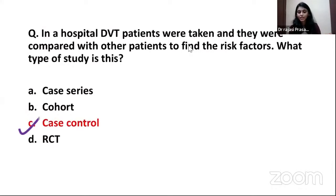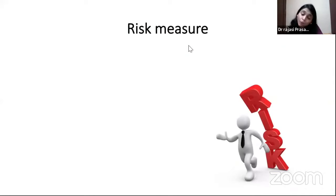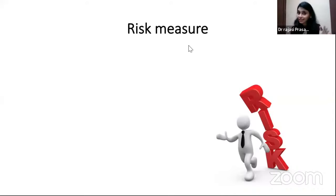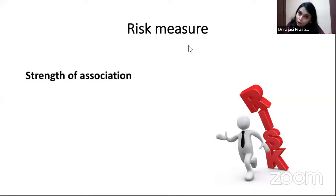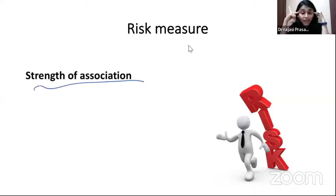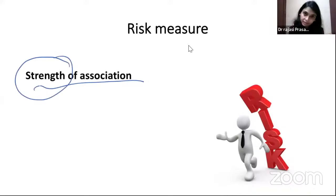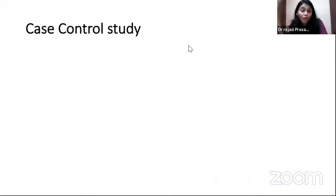Now let's see how to calculate the risk measure. The risk measure is also known as strength of association — a term from your UG entrance exams. So if a question asks for strength of association, it's asking for either odds ratio or relative risk, because those numbers tell you the strength of association between exposure and outcome.